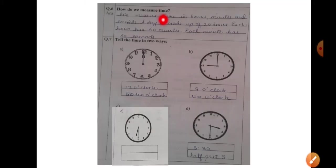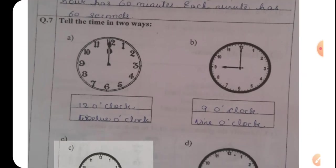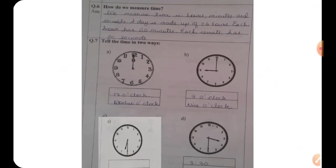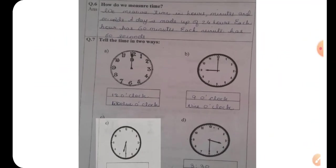Now question number six, how do we measure time? We measure time in hours, minutes and seconds. A day is made up of 24 hours. Each hour has 60 minutes. Each minute has 60 seconds.